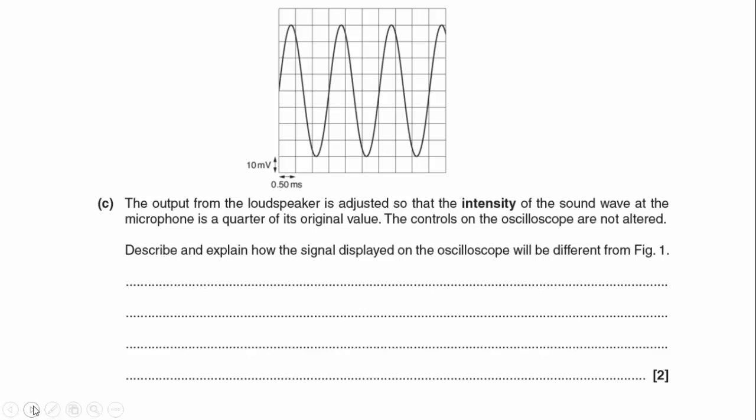The output from the loudspeaker is adjusted so that the intensity of the sound wave at the microphone is a quarter of its original value. The controls on the oscilloscope are not altered. Describe and explain how the signal displayed on the oscilloscope will be different from figure one. So here we've got probably trash in the room and the guitar behind me. But here we go with, we've got figure one.